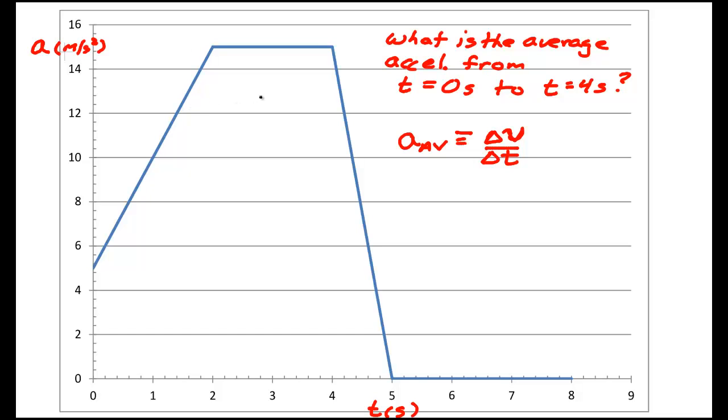So now we're given a different question for an acceleration-time graph. What is the average acceleration from t equal 0 seconds to t equal 4 seconds? Well from 0 seconds all the way over to 4 seconds we do not have a straight line. For any other curve what you have to do is find the area under the curve, which in this case for an acceleration-time graph gives you the change in velocity, and then divide by the change in time.